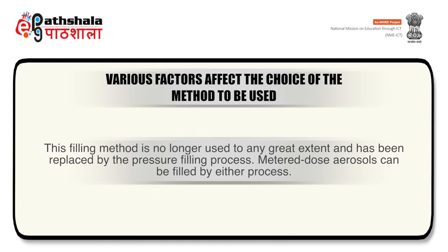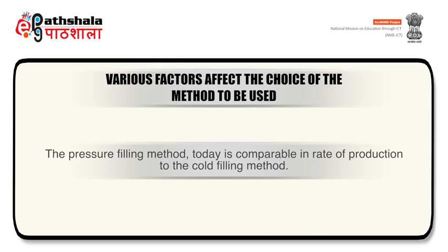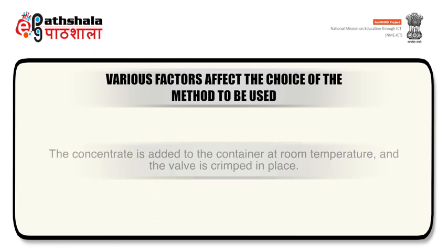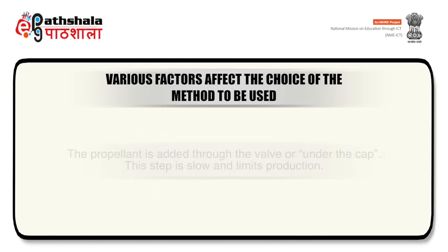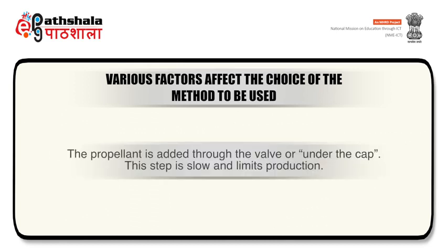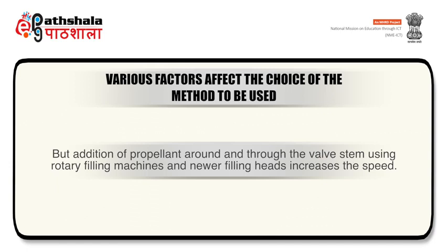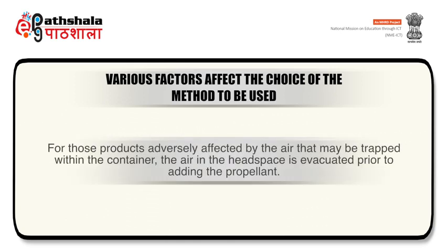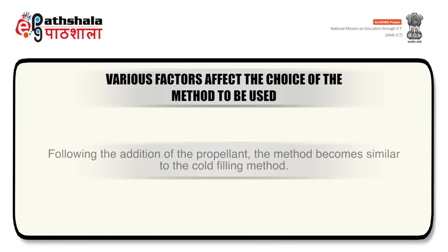Metered dose aerosols can be filled by either of the processes. Presently the pressure filling method is comparable in production to the cold filling method. Concentrate is added to the container at room temperature and the valve is crimped in place. Propellant is added through the valve or under the cap. This step is slow and limits production, but addition of propellant around and through the valve stem using rotary filling machines and newer filling heads increases the speed. For products which are adversely affected by air trapped within the container, air in the head space is evacuated prior to adding the propellant. Following the addition of the propellant, the method becomes similar to the cold filling method.